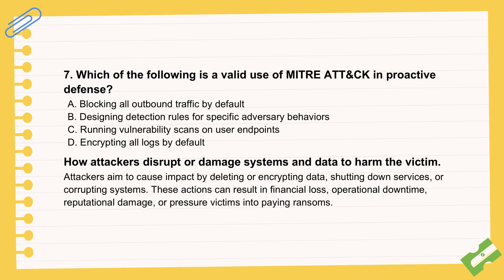ATT&CK is also useful for proactive defense, not just postmortem analysis. Defenders can use it to think like the adversary — look at specific techniques attackers use for persistence or execution, and then design detection rules or monitoring specifically looking for signs of those techniques. Instead of just blocking known bad files, you start detecting the behavior. You see the actions an attacker takes when setting up persistence, allowing for much earlier detection and response. It shifts defense toward understanding how attackers actually operate.